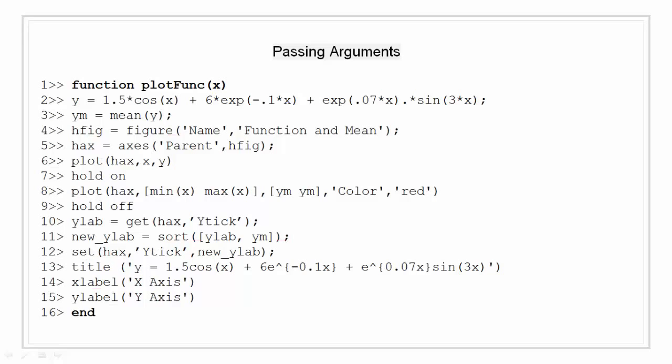Now on the same plot as in line 8, I have plotted the mean of the data with color being red. Now I am taking the default y-axis tick values from the axis hax into variable ylab. Now I am sorting this value and mean values and then assigning them back to hax ticks. I have finished the function by giving the figure a title, an x label and a y label.